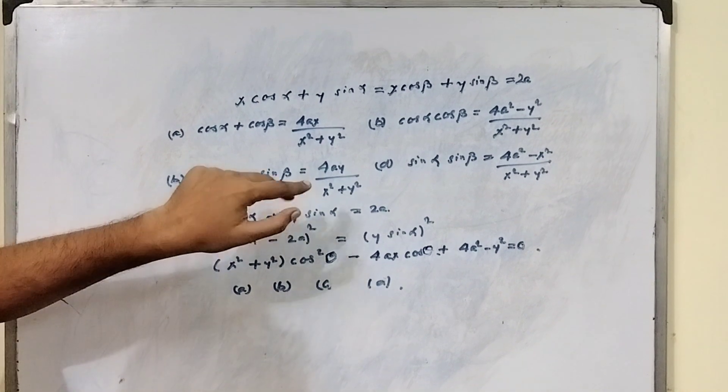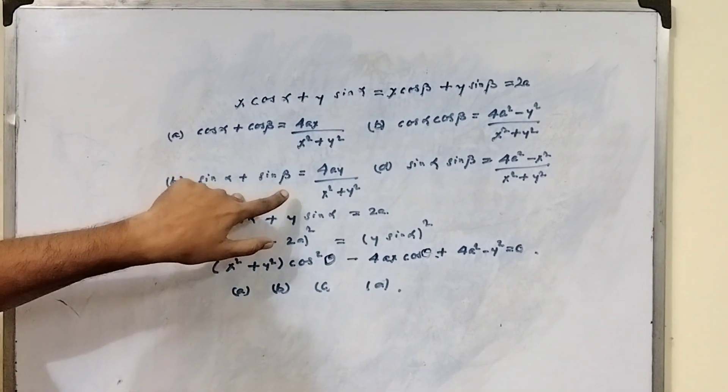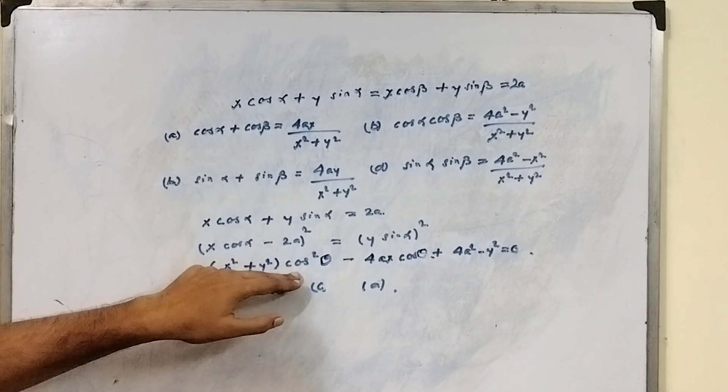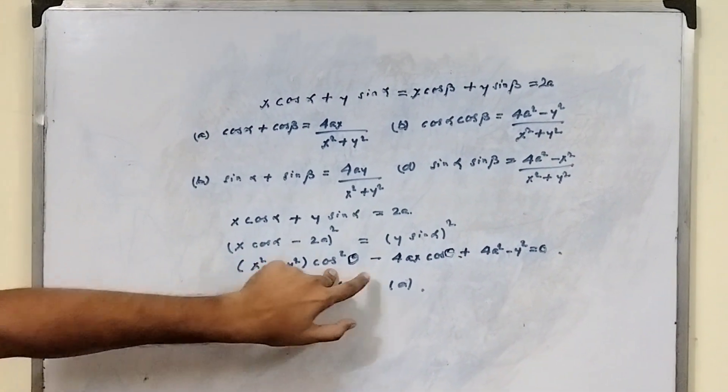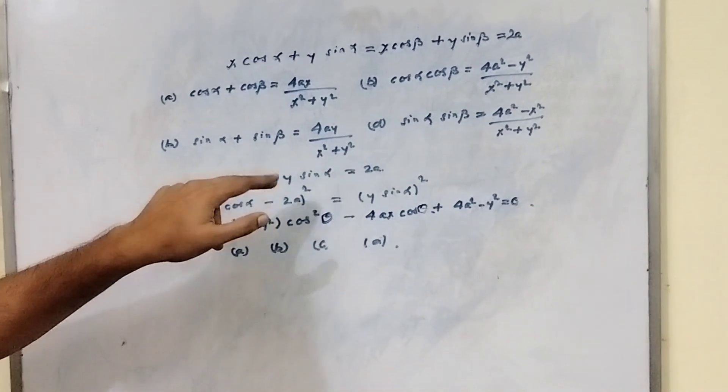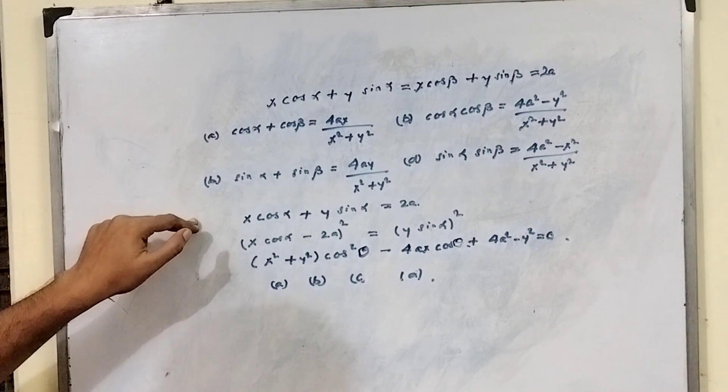C will be the quadratic if we do with beta, then the same thing will result. And when we make the quadratic with sine theta, then we will get the c and d. So all the answers are correct.